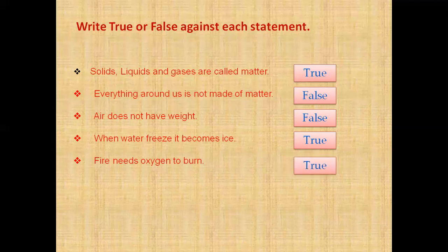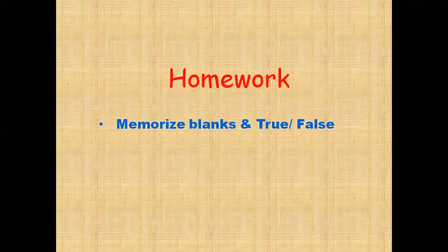Let's review: number one, solids, liquids, and gases are called matter — true. Number two, everything around us is not made of matter — false, because everything around us is made of matter. Number three, air doesn't have weight — false, because air has weight. Number four, when water freezes it becomes ice — true. Number five, fire needs oxygen to burn — true. This completes our exercise. Today's homework is to memorize the fill-in-the-blanks and true/false answers, and also write them in your notebook.